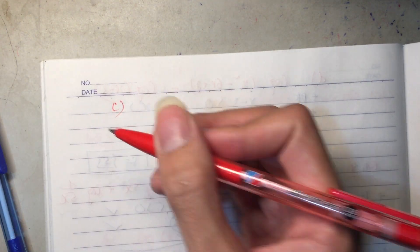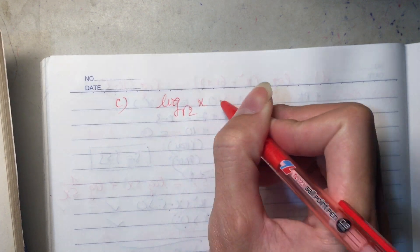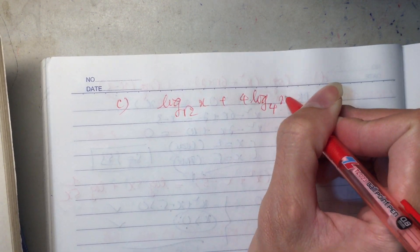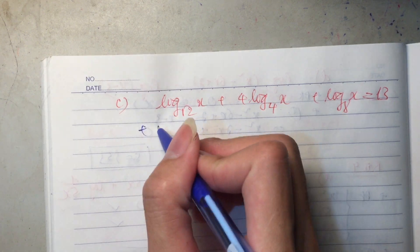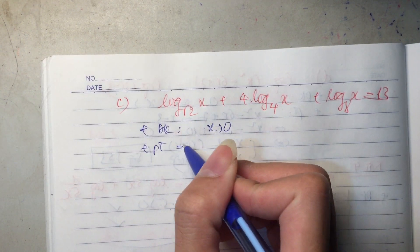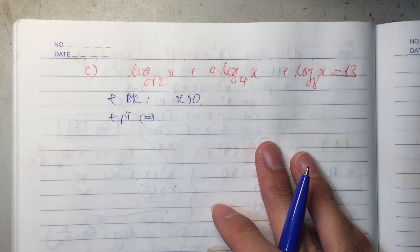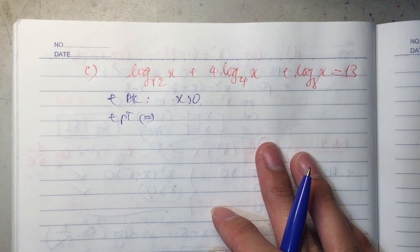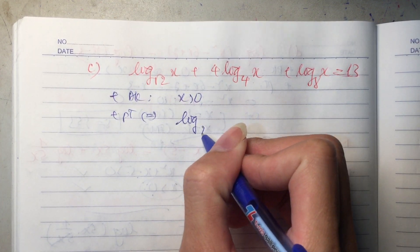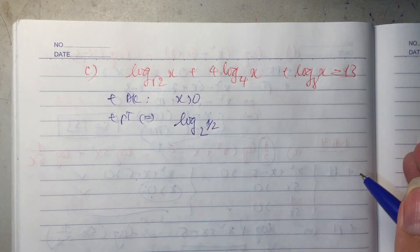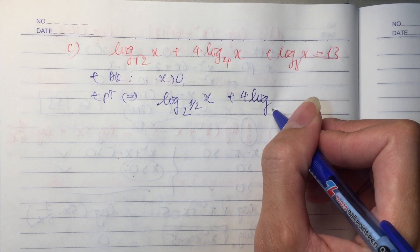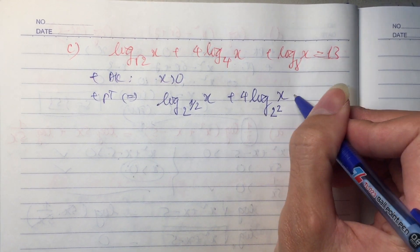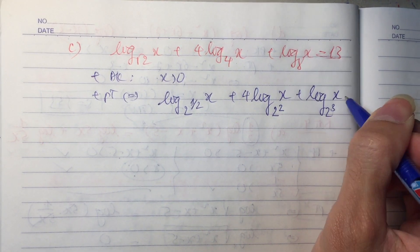Cuối cùng là câu C. Log cơ số căn 2 của x, cộng với 4 lần log cơ số 4 của x, cộng với log cơ số 8 của x, bằng 13. Đây là đổi về cùng 1 cơ số. Câu này có điều kiện là x lớn hơn 0. Phương trình tương đương với: bây giờ em đổi hết về cơ số 2 đi. Căn 2 là 2 mũ 1 phần 2; 4 là 2 mũ 2; 8 là 2 mũ 3.